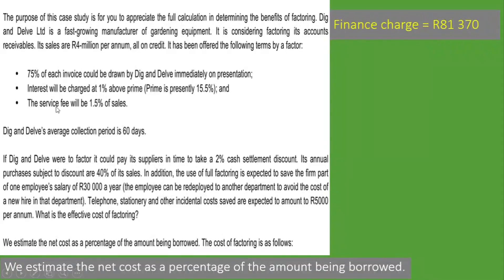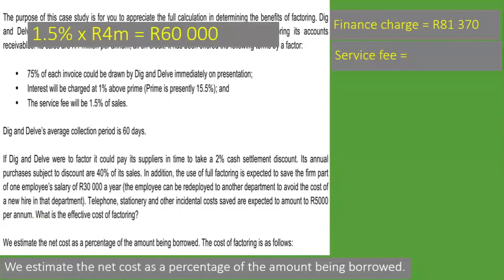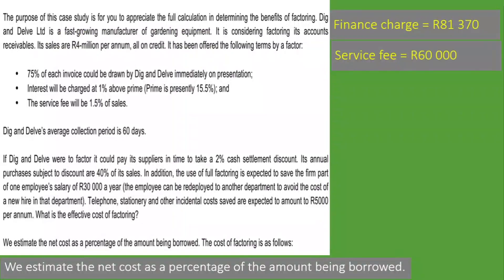We are also told that the service fee will be 1.5% of sales. Taking 1.5% of 4 million rand gives us 60,000 rand. Adding the finance charge and service fee together: 81,370 rand plus 60,000 rand gives us a total actual cost of factoring of 141,370 rand. If no further information were provided, we could stop here and calculate this as a percentage.